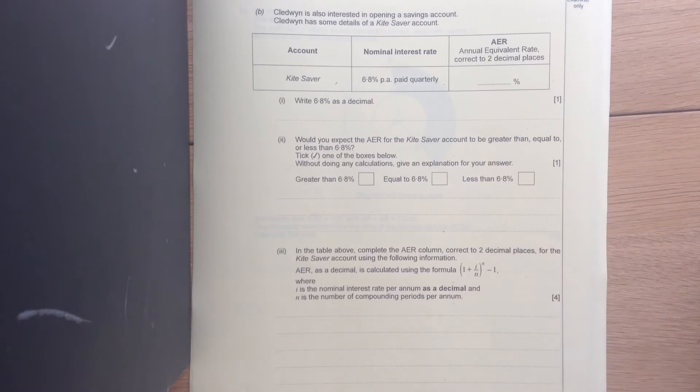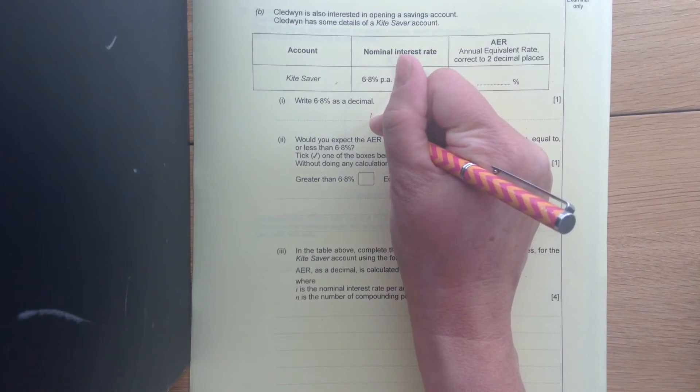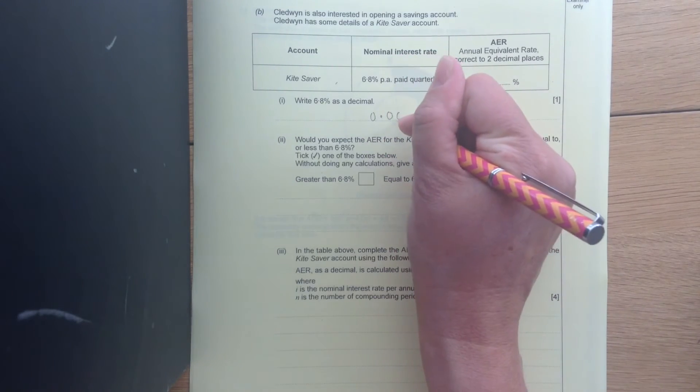Alright, so to turn the percentage into a decimal, divide by 100. So we've got 0.068.